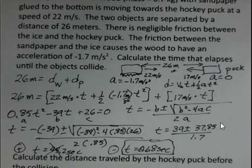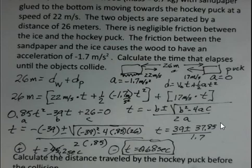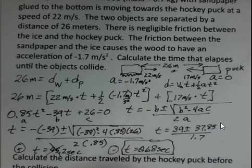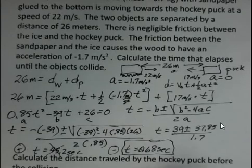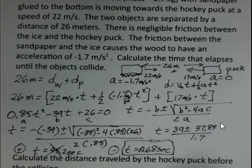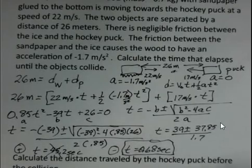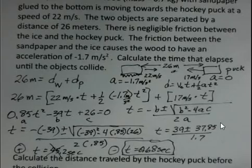What about the distance traveled by the hockey puck before the collision? Again, that's easy. The distance the hockey puck travels is traveling at a constant speed, 17 meters per second, for 0.68 seconds before the collision occurs. So that's 11.6 meters.